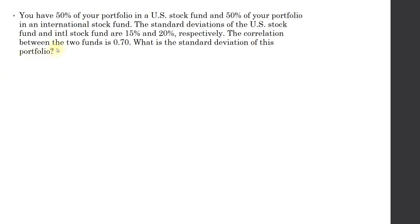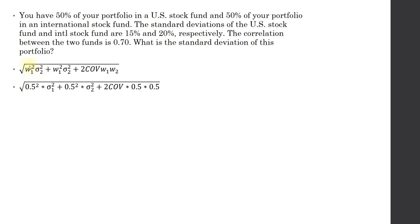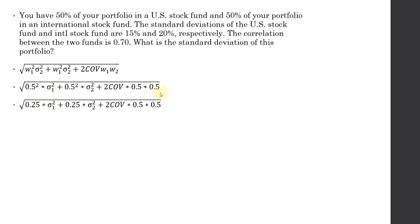To begin, let's bring up the formula from the prior page. From here, let's substitute our weights. W represents the weight — how much each asset is weighted along with their respective standard deviations. This particular example has 50% in U.S. stock and 50% in international stock, so these two W's become 0.5 squared and 0.5 squared, which simplifies to 0.25 and 0.25.